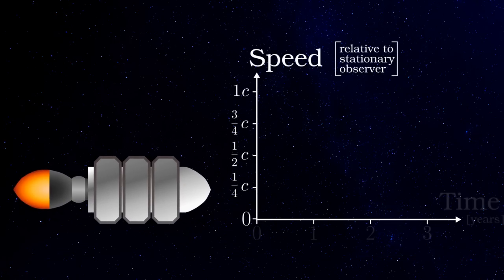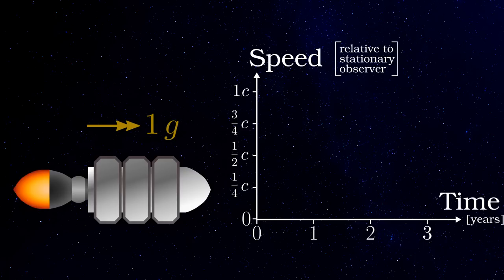One consequence is that even when an object is experiencing what it feels as a constant rate of acceleration, for example if a spaceship's engines are putting out a constant amount of thrust, it will never quite reach the speed of light.